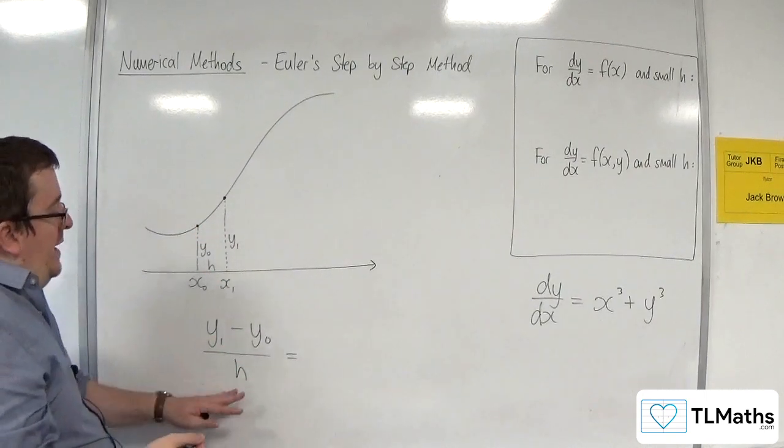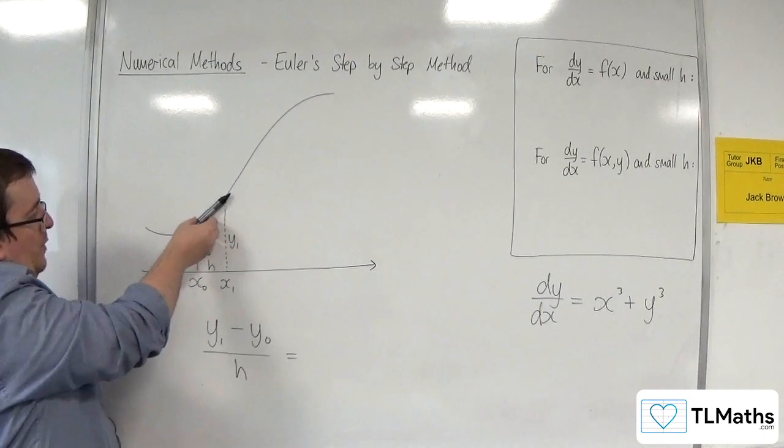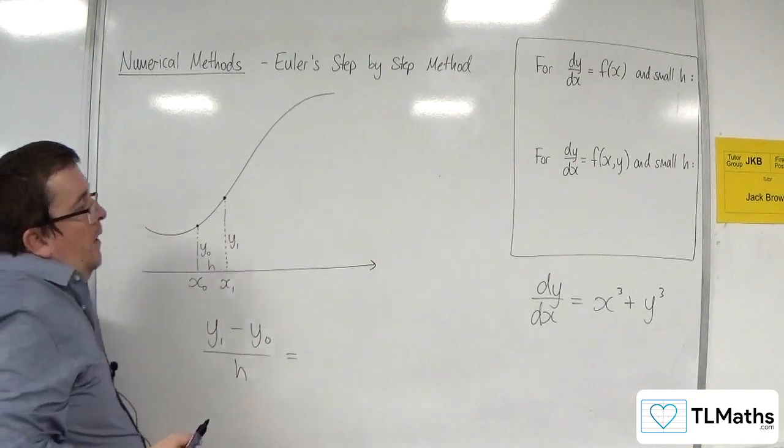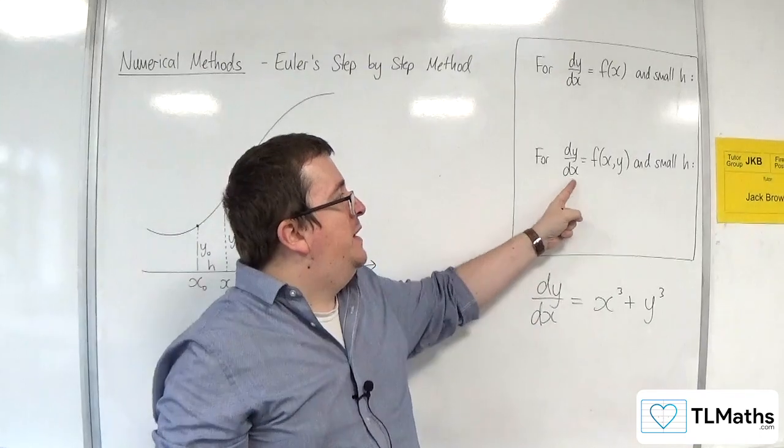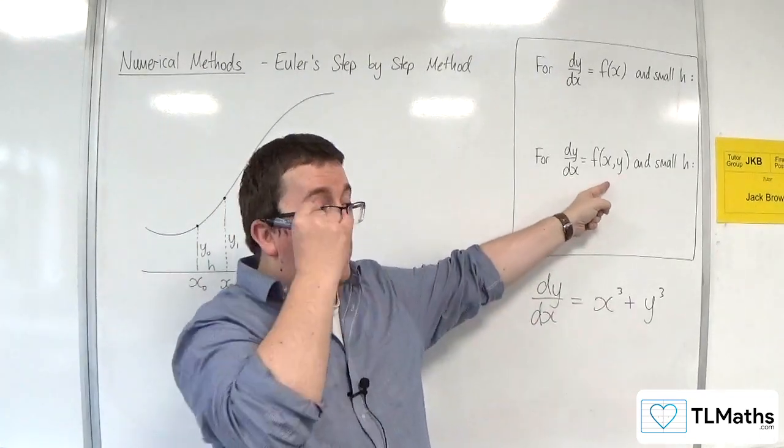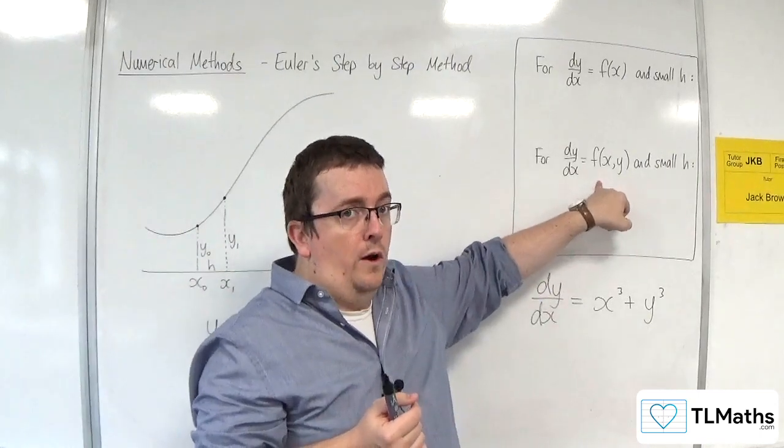Now, as that is the gradient of the line between those two points, I know what the gradient of the function is, because if I use the dy by dx equals some function of x and y, then this is telling me that the gradient function is f of x comma y.